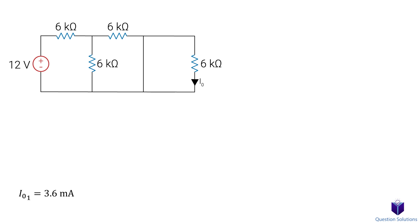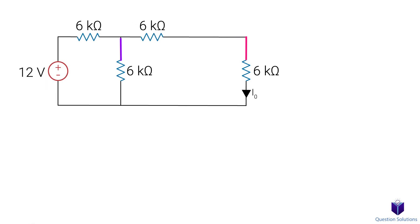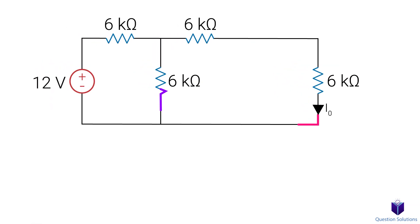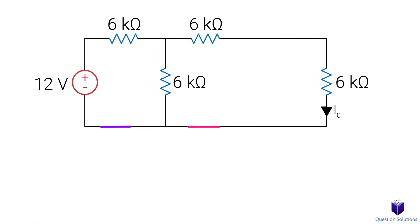Now we need to figure out I0 again with the voltage source in the circuit. To solve this circuit, we can use voltage division, but let's go with mesh analysis. The method you use is completely up to you and what you feel comfortable with. I do want to point out that one of the main points of superposition is to reduce the number of simultaneous equation solving, but again, the method you use is up to you.